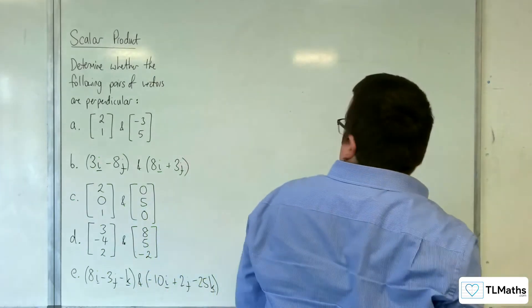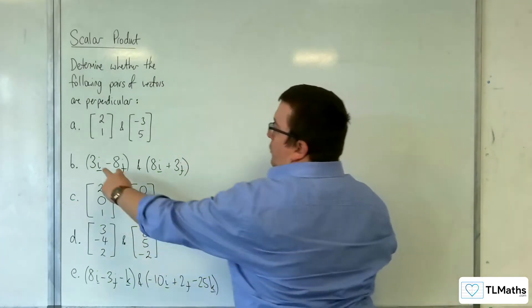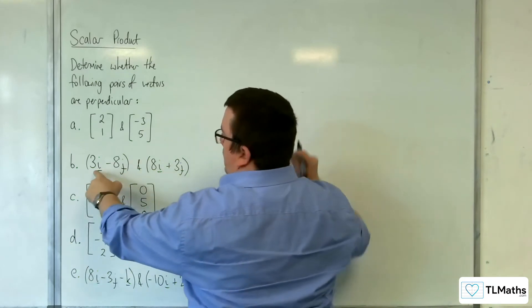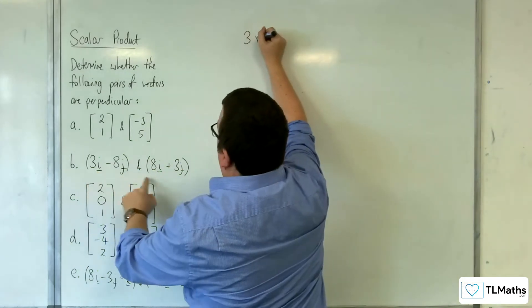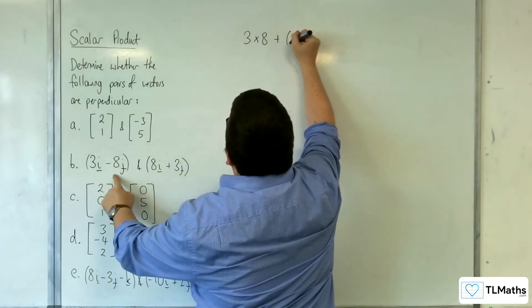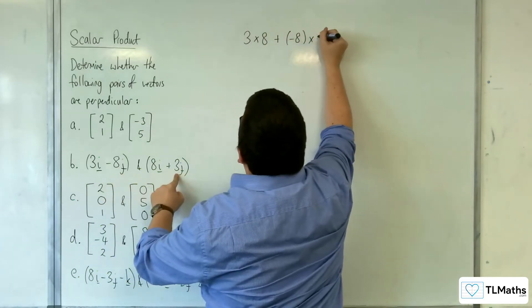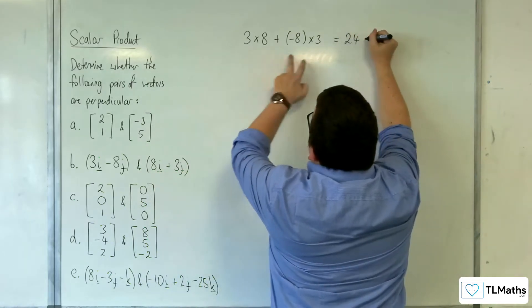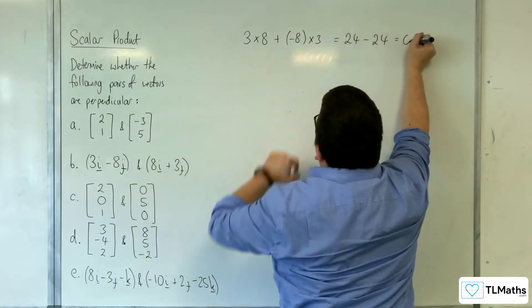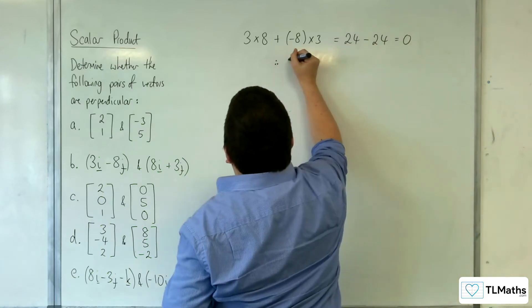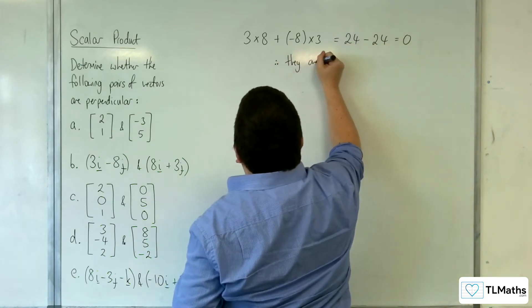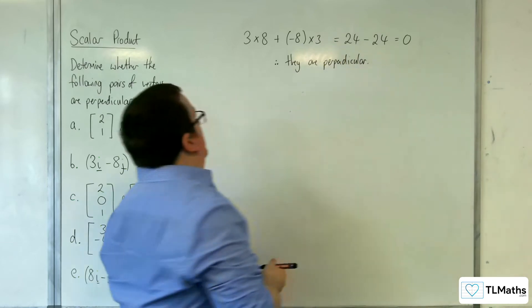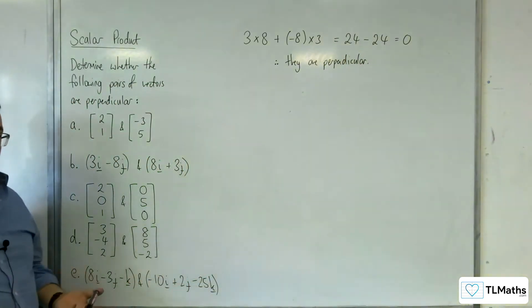Right, B. We've got 3i take away 8j and 8i plus 3j. So we need to do 3 times 8 plus minus 8 times 3. And so we get 8, 16, 24, take away 24, equals 0. Therefore, they are perpendicular. OK. Scalar product is 0, so they are perpendicular.